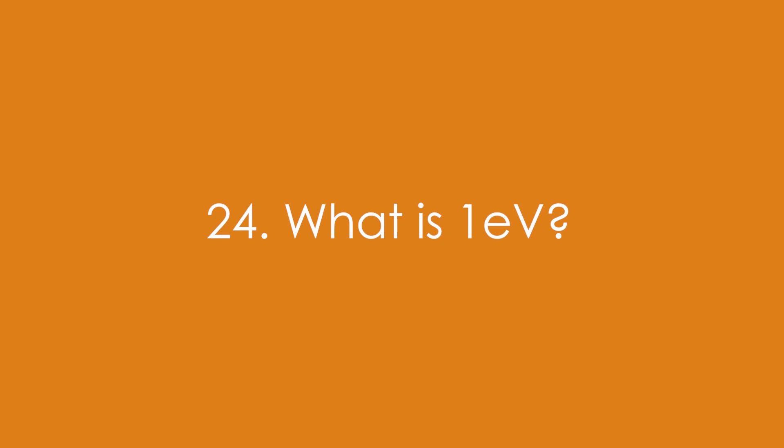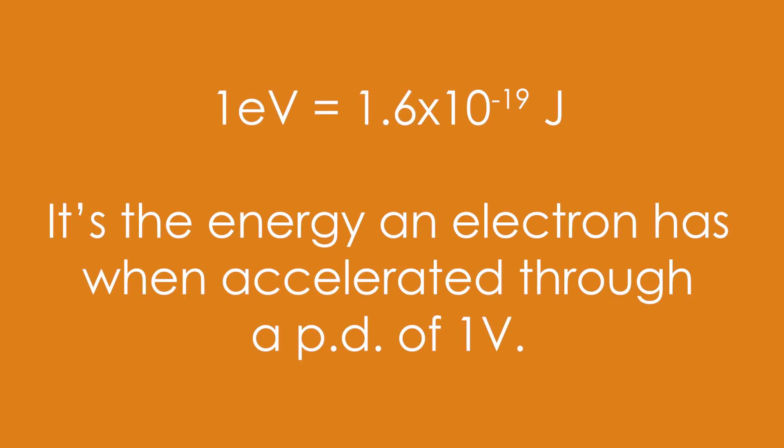24. What is one electron volt? One electron volt is equal to 1.6 times 10 to the minus 19 joules, but not a lot of people know that it's the energy an electron has when accelerated through a potential difference of one volt. That's the definition.